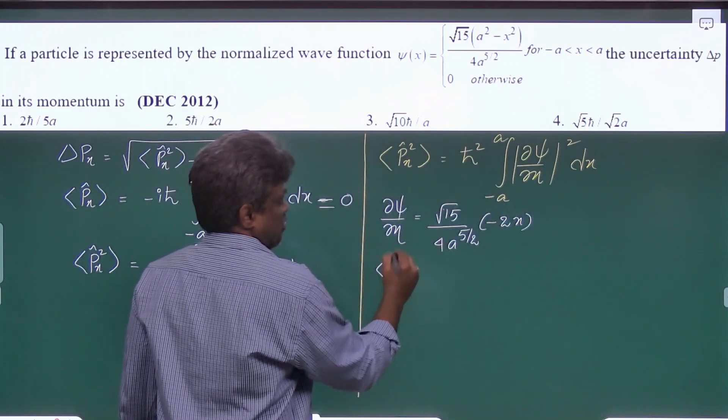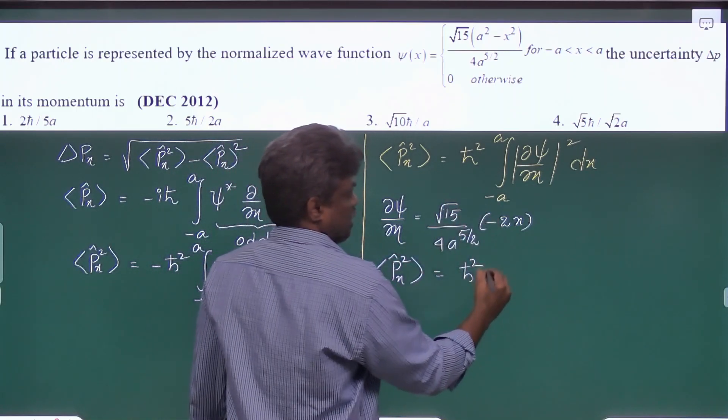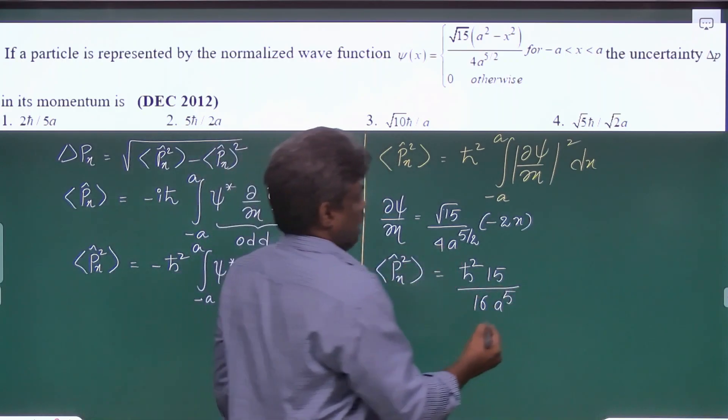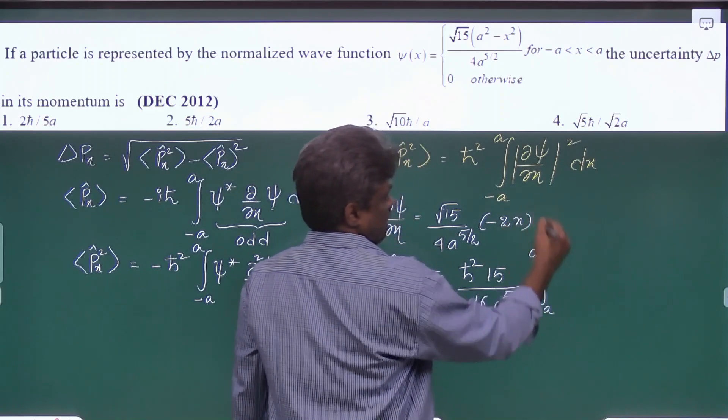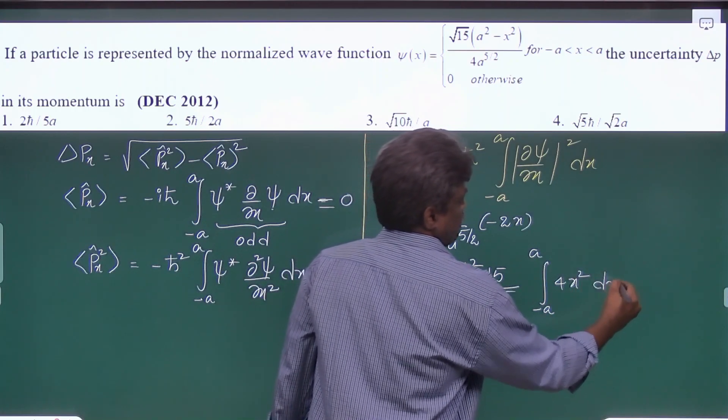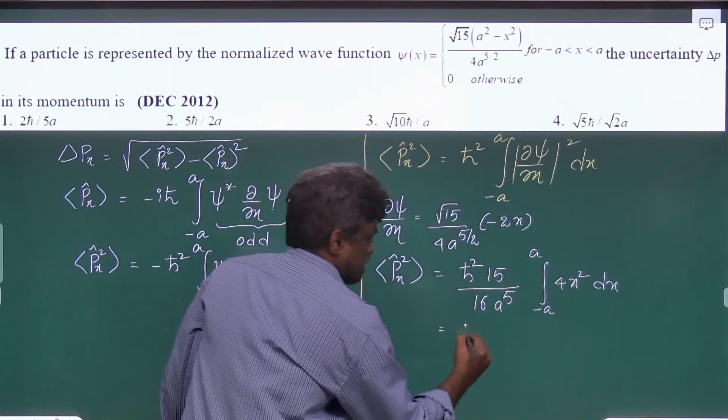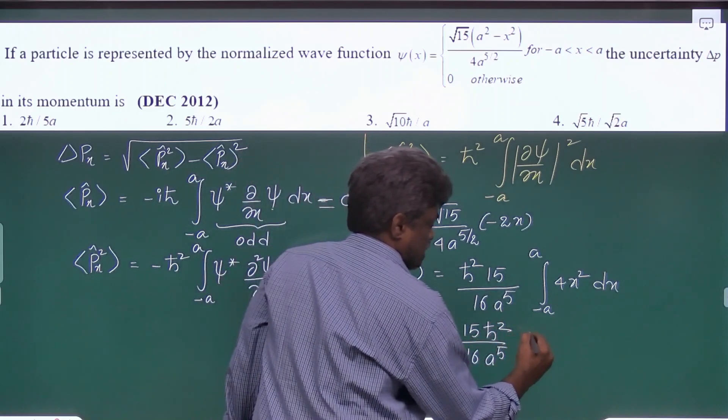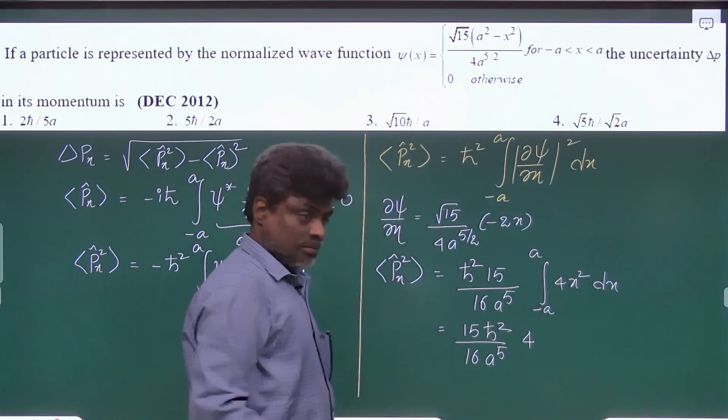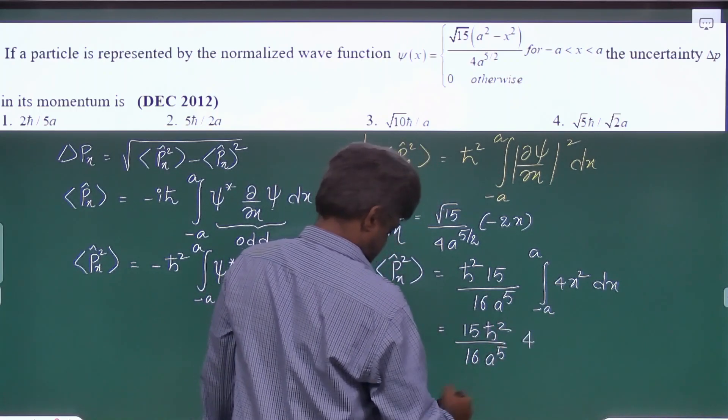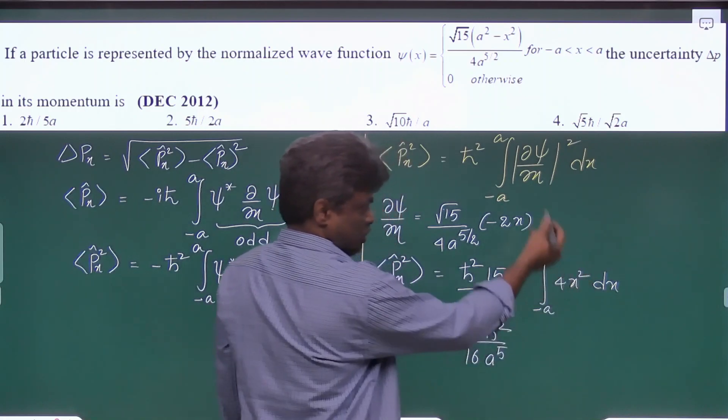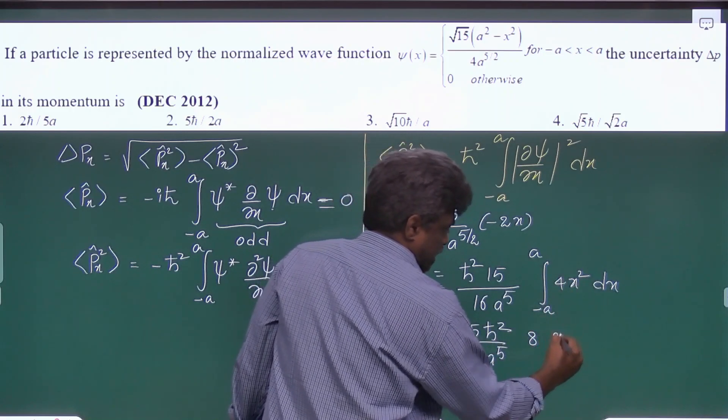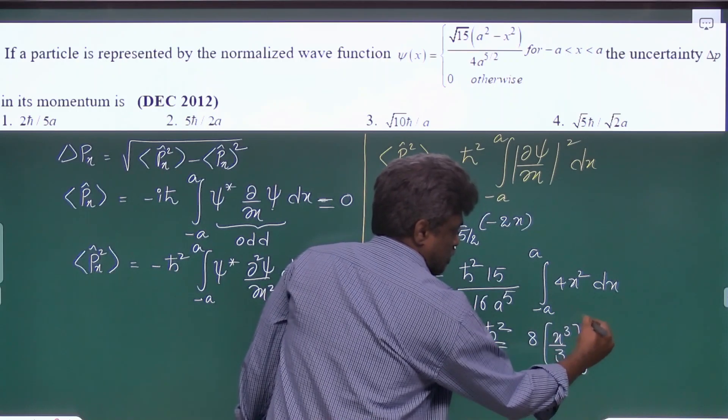So average value of px square is h cross square and square of this, 15 by 16 a power 5, and here this will be minus a/2 to plus a/2 and it is 4x square dx. And if you take this integral this is 15 h cross square by 16 a power 5 and this is 4 as it is. And this is an even function, we can write it as 2 into 0 to a, that's why here it is 8 and x square that is x cube by 3 from 0 to a.